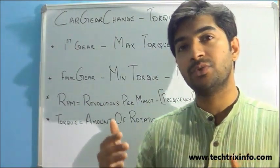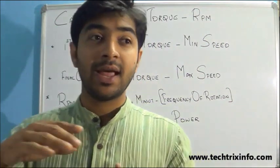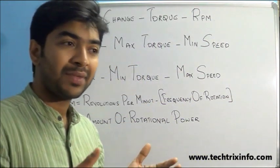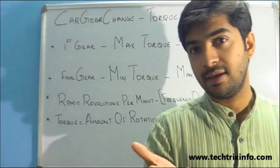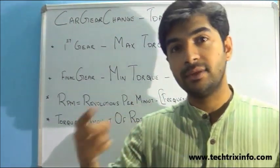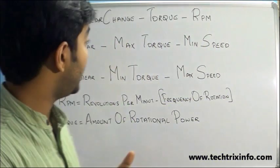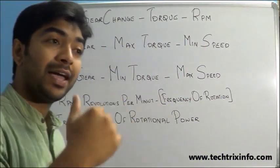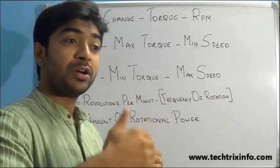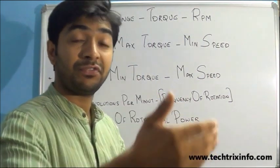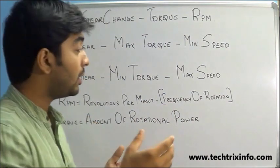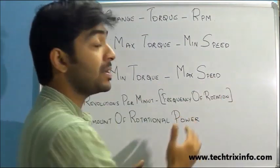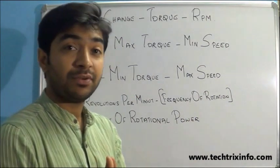When we drive on a highway, the resistance is minimum because we are going at a very high speed — the wheels are already rotating. We need maximum speed and the torque requirement is very low because the wheels are already rotating. So we select the final gear while driving a highway, going from first to second, third, fourth, or fifth gear if available.